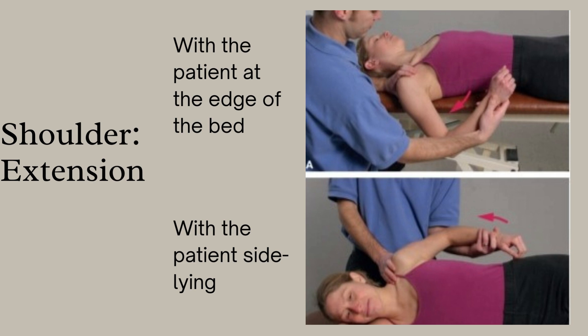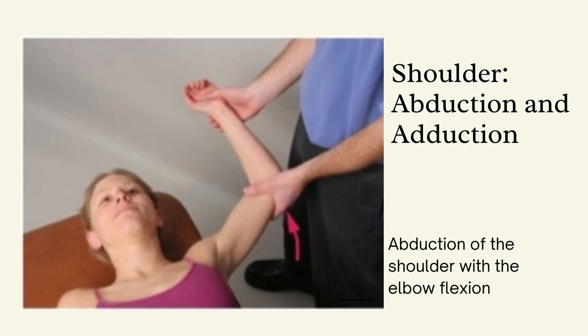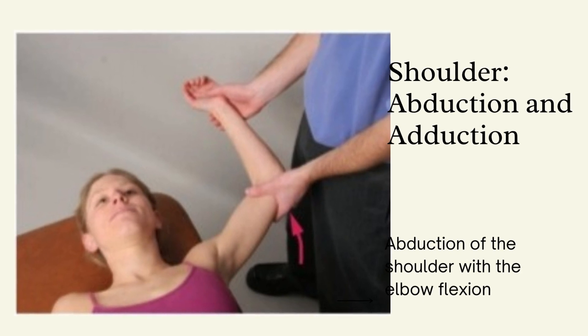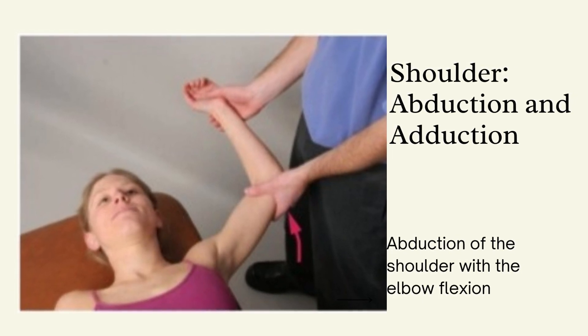The third range of motion technique for the shoulder is shoulder abduction and adduction. Abduction is moving the joint away from the body, while adduction is moving the body part towards the body. Hand placement is shown in the picture. An important point about shoulder abduction and adduction is that to reach the full range of abduction, there must be external rotation of the humerus and upward rotation of the scapula.